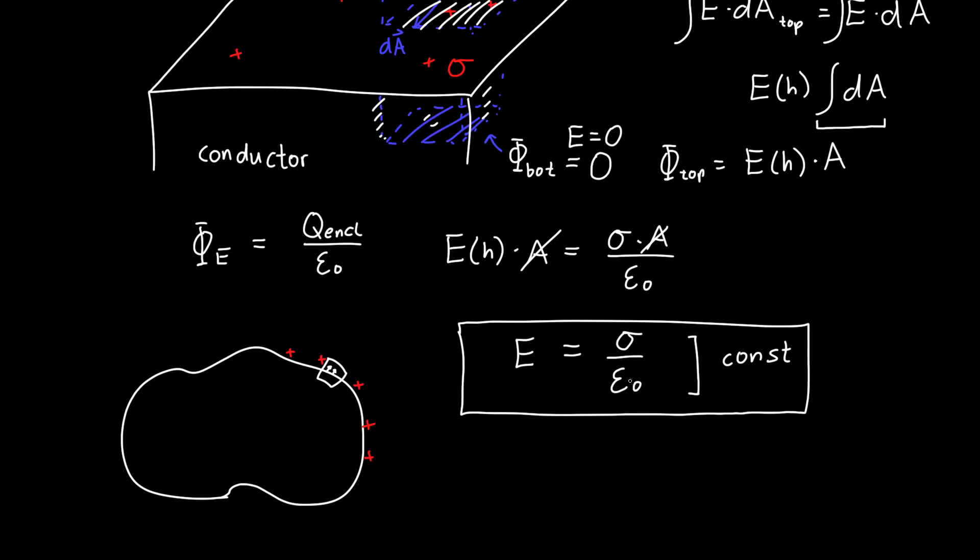Now notice that this is actually twice the electric field for an infinite sheet of charge. And the reason for that is because we don't have any electric field inside the conductor. So we only have one surface to worry about. So all of our electric field is essentially concentrated outside of our conductor.